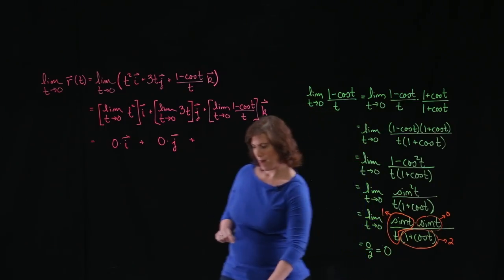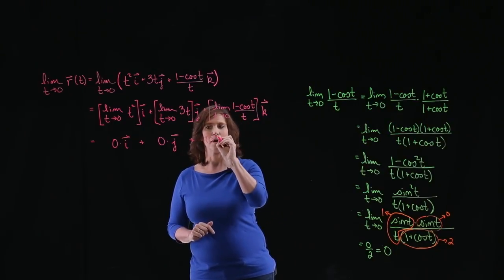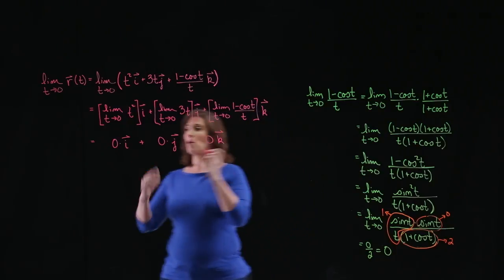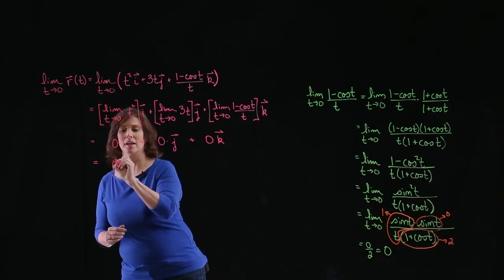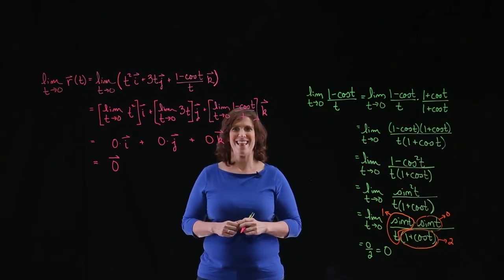So now I've shown you why this limit is really just a 0. So I have 0 times my vector k. This whole thing is just the 0 vector. I hope that was helpful. Thanks.